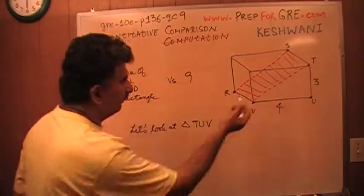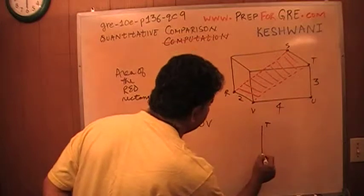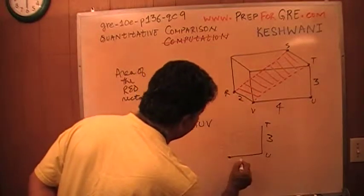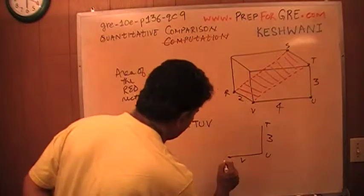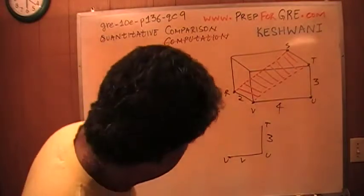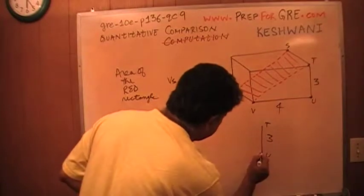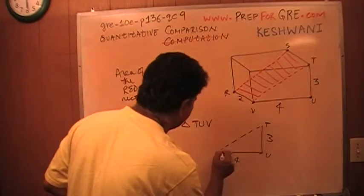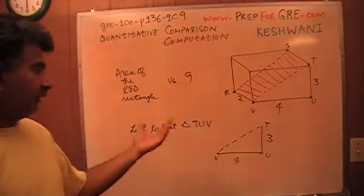In that triangle, T to U is 3, U to V is 4. This is the part we have to figure out, and that's actually very simple.